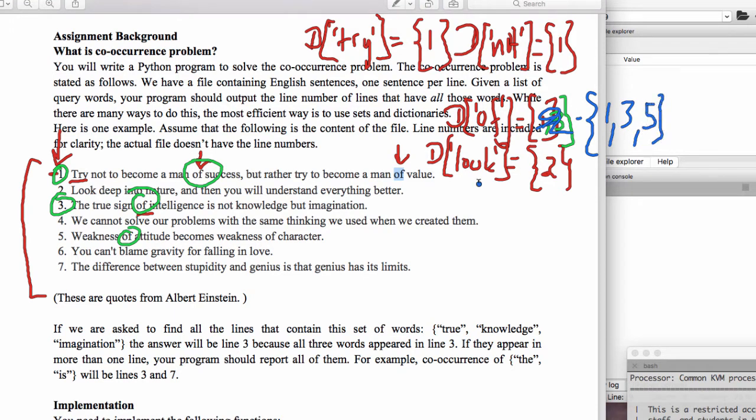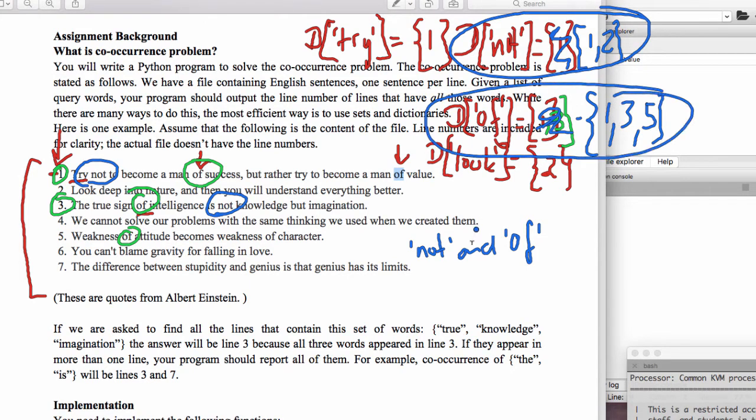I think that's all the only of's that I have there. Whereas something like not, not appeared there, not appeared there, and so that will have, when I'm done, that will have the set one and two. And so one of the questions is what lines do the words not and of occur on?